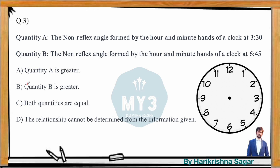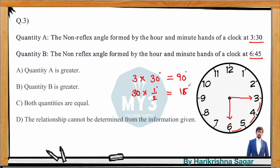Now back to the GRE comparison question. For Quantity A at 3:30: hour hand at 3, minute hand at 6, gap of 3 hours = 90 degrees. With 30 minutes of tilt: 30 × 0.5 = 15 degrees. At 3:30 the hour hand moves towards 4, so we subtract: 90 − 15 = 75 degrees. Quantity A = 75 degrees.